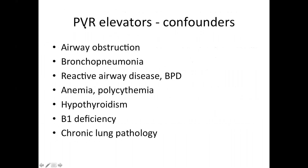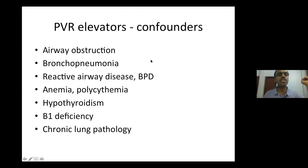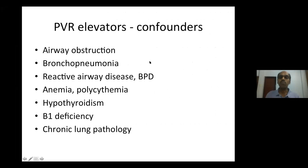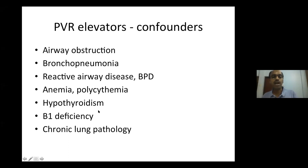Pulmonary vascular resistance gets elevated due to varieties of confounders: airway obstruction, bronchopneumonia, reactive airway disease, bronchopulmonary dysplasia in babies born premature, significant anemia or polycythemia, hypothyroidism, vitamin B1 deficiency, or any chronic lung pathology.